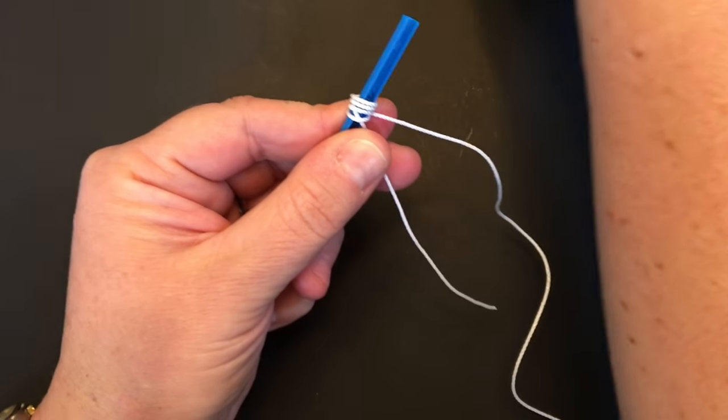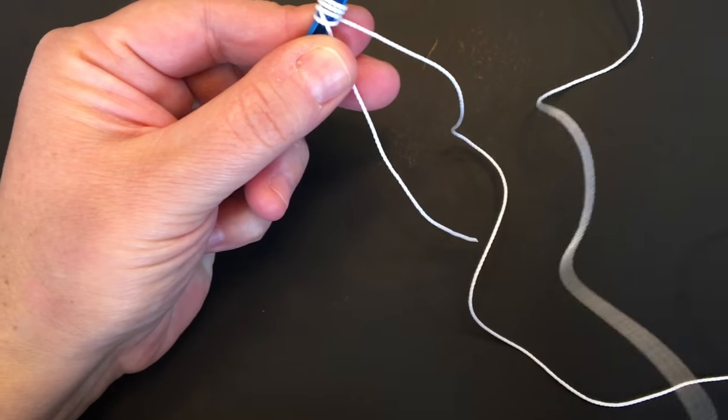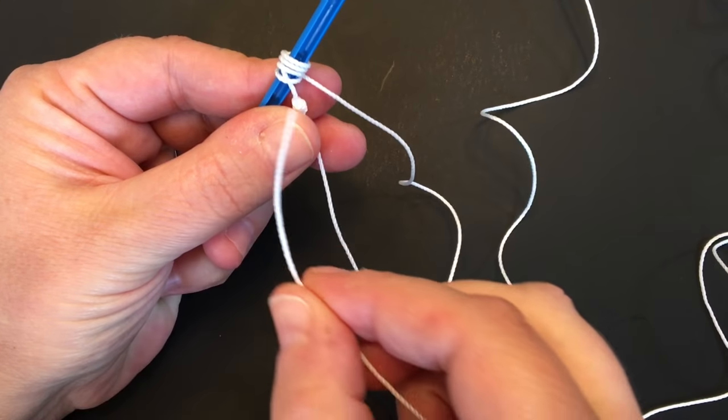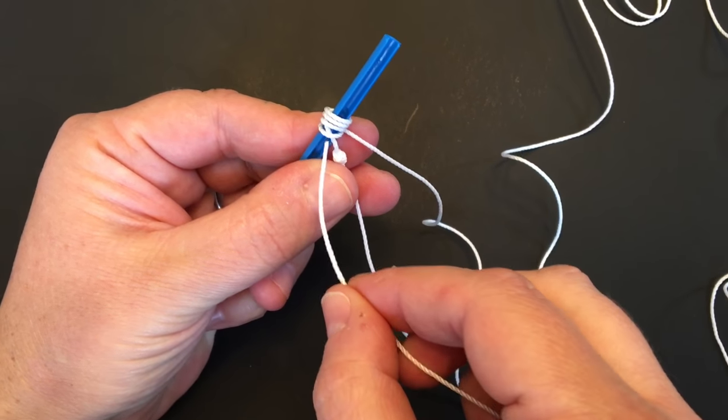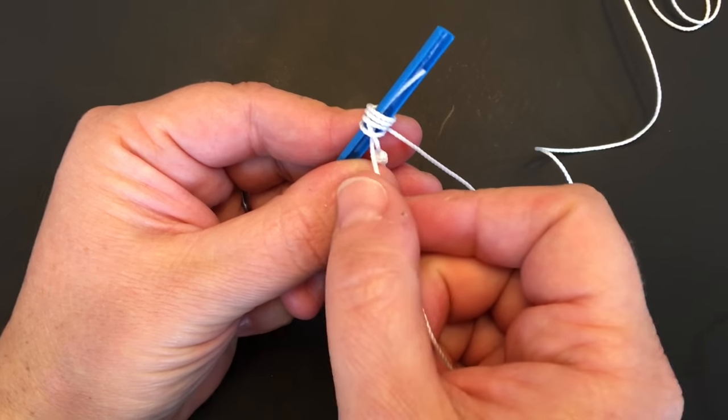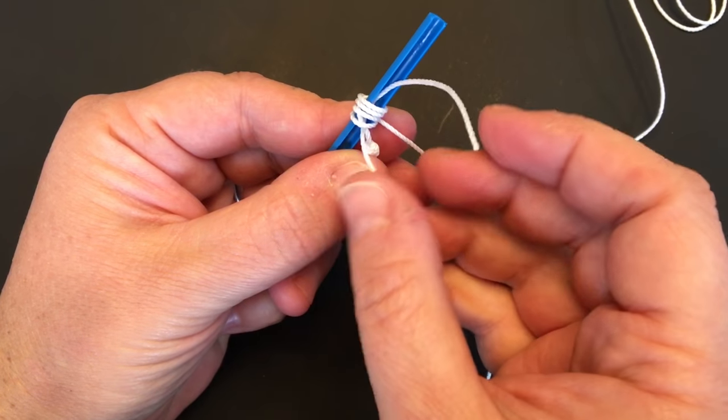Next, you want to take the end of the cord, the long end of the cord, and thread it up through the groove under the loops.